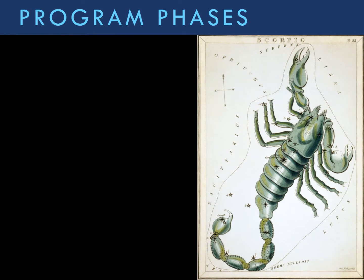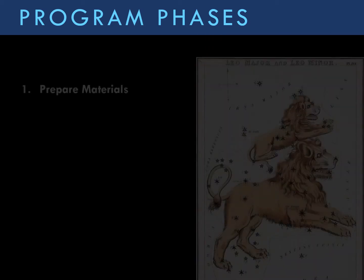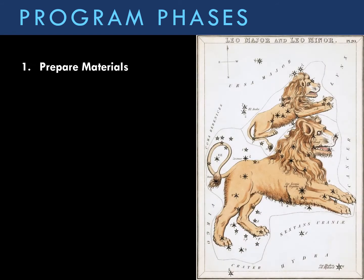Cosmic Constellations is implemented in five phases and makes a robust multiple session investigation. We'll go through each phase in detail, but here's an overview. First, you will prepare the materials and download the free resources. You'll also want to collect some art supplies.